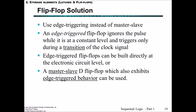The solution to this flip-flop problem is to use edge triggering instead of a master-slave flip-flop. An edge-triggered flip-flop ignores the pulse while it's at a constant level and triggers only during the transition of the clock signal. Whilst the clock signal is the same value, nothing's happening — it's when there's a change: a rising edge going from 0 to 1, or a falling edge going from 1 down to 0. This edge-triggered flip-flop triggers on an edge.